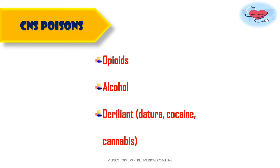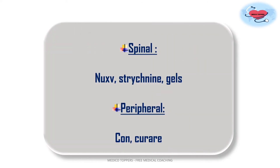Next come spinal poisons and peripheral poisons — this is very important, as this question has been asked in more than 6 to 7 competitive exams. Which of the following is a peripheral nerve poison? The answer is conium or curare. C and C — conium and curare — are peripheral nerve poisons. Spinal poisons are Nux vomica, strychnine, and gelsemium. Strychnine is the active principle of Nux vomica. So remember: Nux vomica, strychnine and gelsemium are spinal poisons; conium and curare are peripheral nerve poisons.